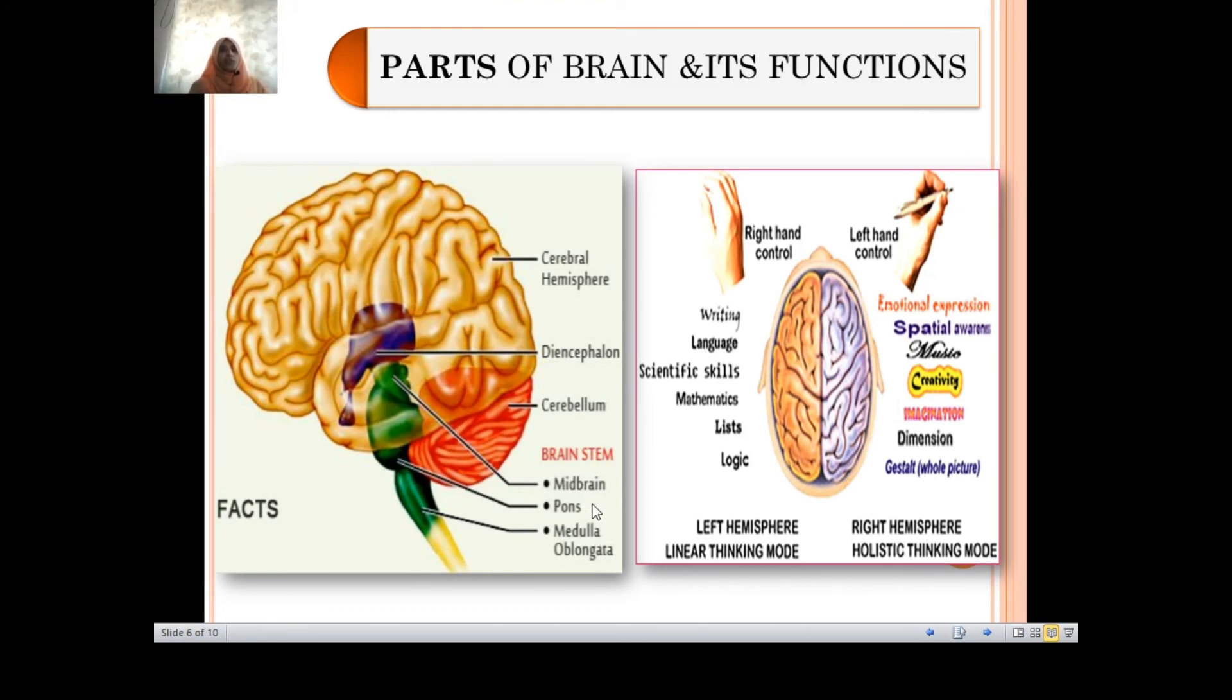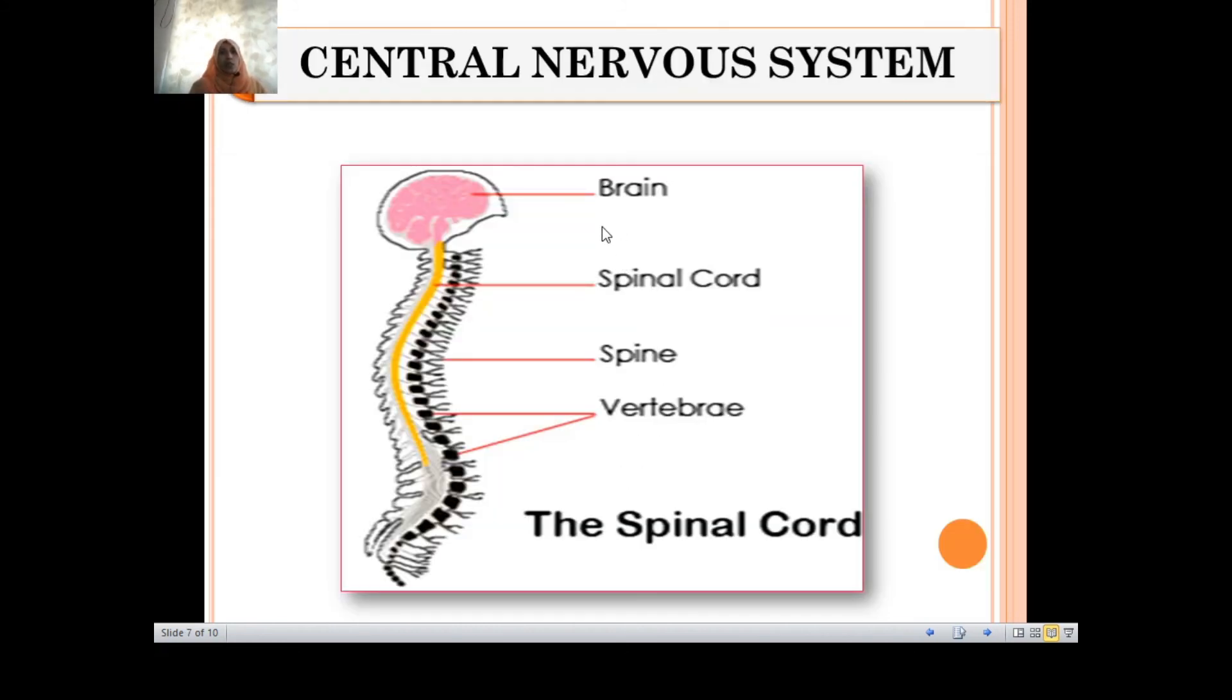This medulla oblongata, pons, midbrain, all they form the other part of the brain. Now the next important component, you see, it is originating from the brain, then it continues. When you just take your hand and try to feel your back, you see that there is a bone, backbone. That is made up of vertebral columns. Inside those vertebral columns, there is this thread-like structure which passes from the brain up till the last vertebral column, that is the spinal cord.